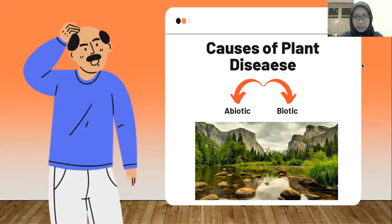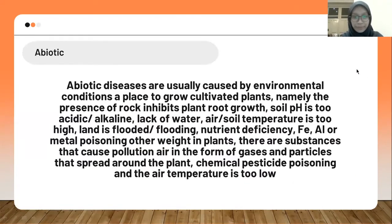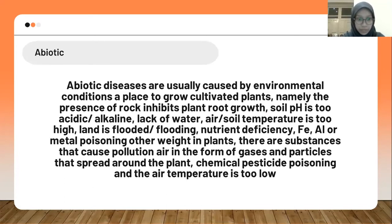There are two causes of plant disease: first, abiotic; and second, biotic. Abiotic diseases are usually caused by environmental conditions of the place where plants are cultivated, namely: the presence of rocks inhibiting plant root growth, soil pH that is too acidic or alkaline, lack of water, air or soil temperature that is too high, plant fruiting issues, nutrient deficiency, metal poisoning, air pollution from gases and particles, chemical pesticide poisoning, and air temperature that is too low.